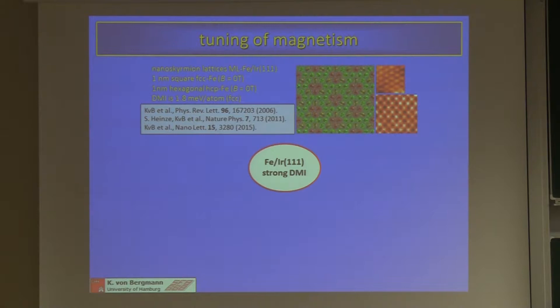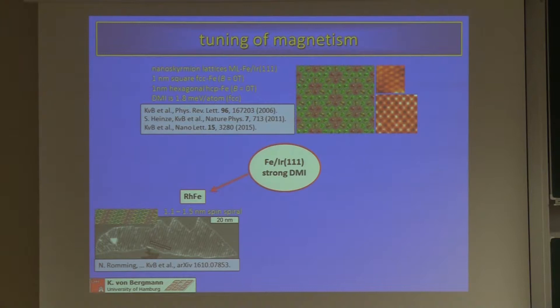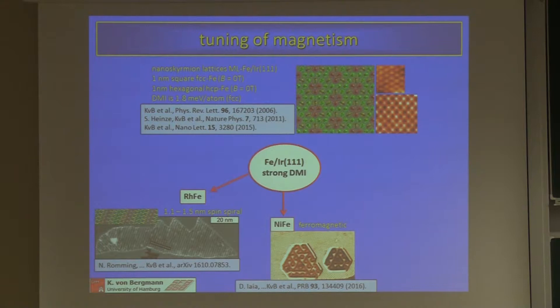To tune this interface we can add different overlayers. If we put a monolayer of rhodium on top of the iron, we go from this two-dimensional magnetic state to a uniaxial spin spiral with a very similar magnetic length scale of 1 to 1.5 nanometers. This state also doesn't change in external magnetic fields up to 9 tesla. If we put a monolayer of nickel on top, the nickel-iron bilayer just becomes ferromagnetic, which is also rather boring.